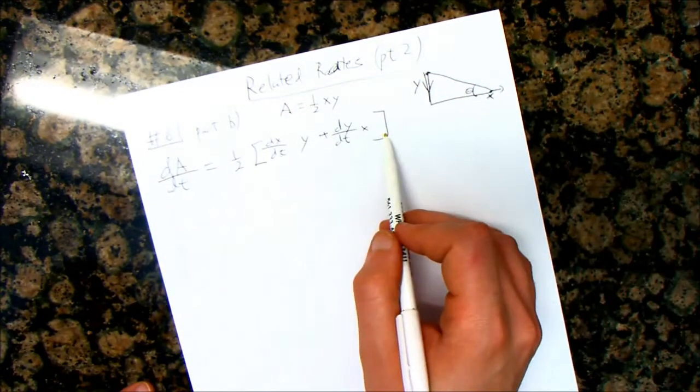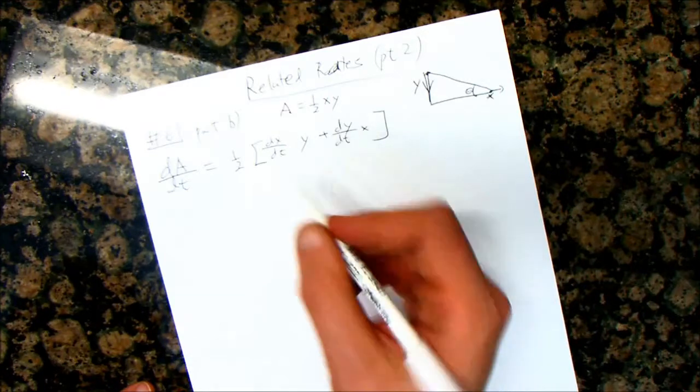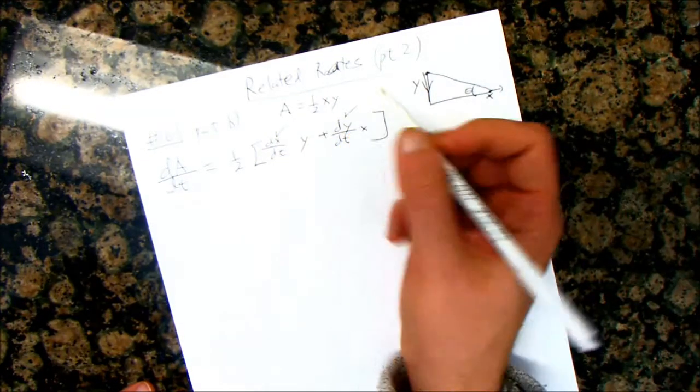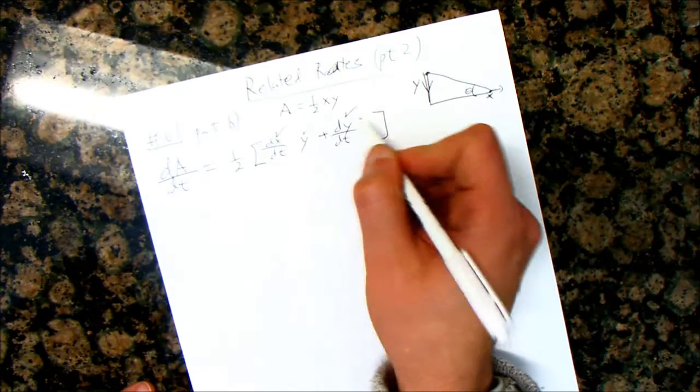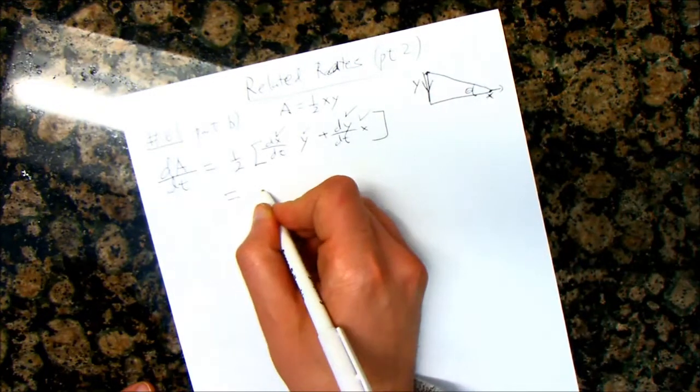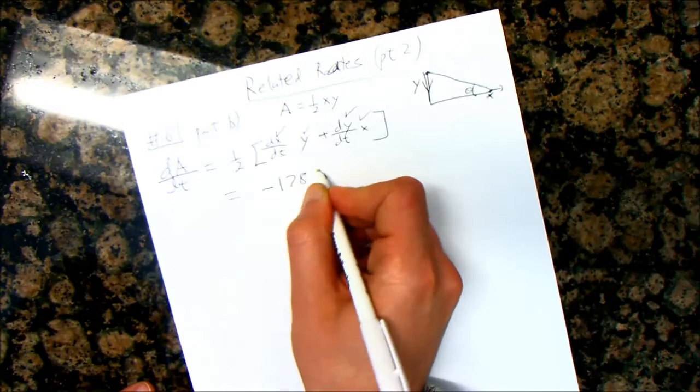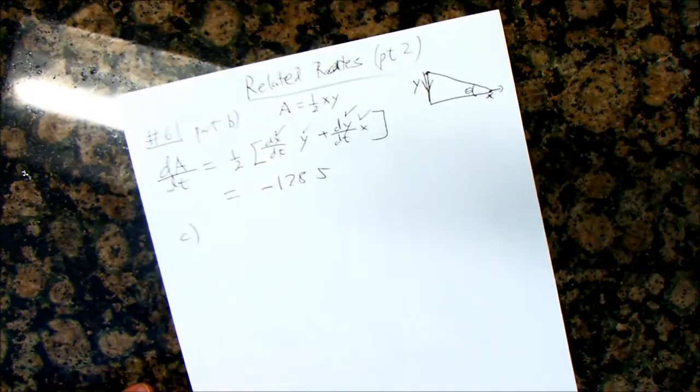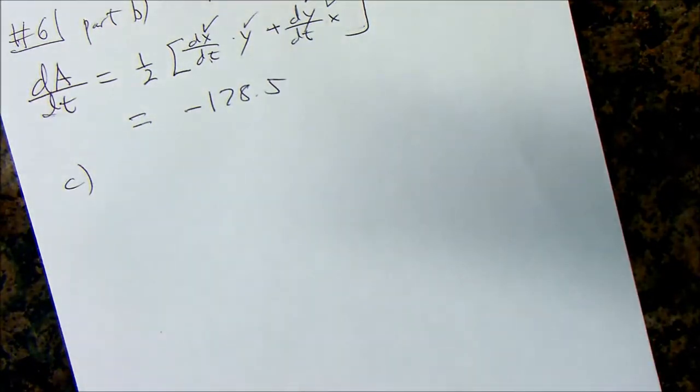This point here represents y, this point here represents x, and then the speed that they're moving are dx and dy. You can re-watch the previous video if you need all the details. But we were at this point here, and we had figured all these out from part A, and we end up with negative 178.5.